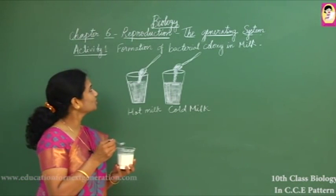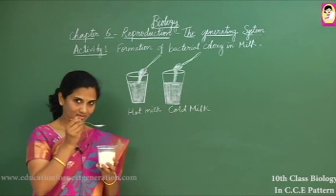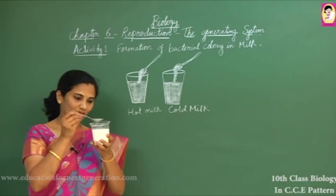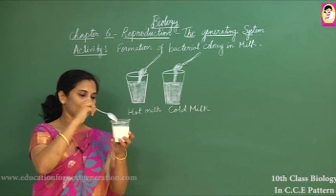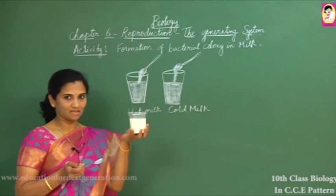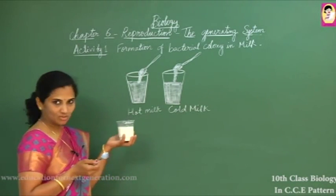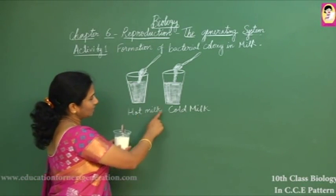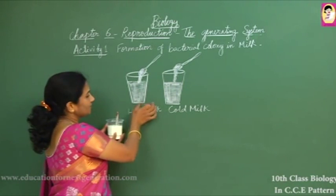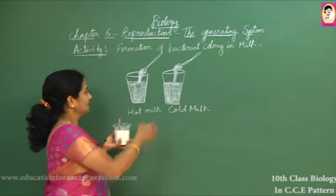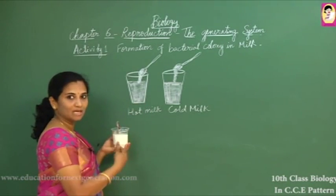Now let us see an activity about the formation of a bacterial colony in milk. Lactobacillus bacteria present in curd, when a few drops are added to hot milk and stirred properly, will convert the milk into curd within a few hours. Can you guess whether hot milk or cold milk curdles faster?